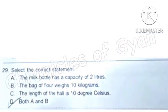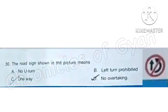Question 29: Select the correct statement. Statement A: The milk bottle has a capacity of 2 liters. This is correct. Statement B: The bag of flour weighs 10 kilograms. This is correct. Statement C: The length of the hall is 10 degrees celsius. This is incorrect. As the standard unit of length is meter. So the correct answer is option D.